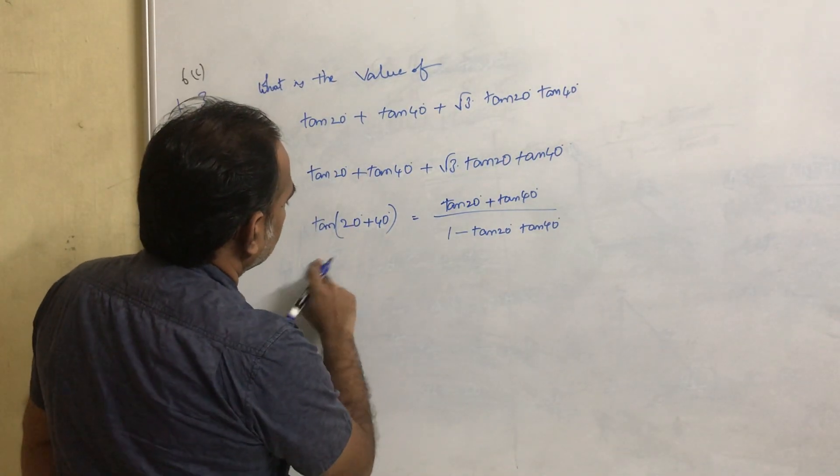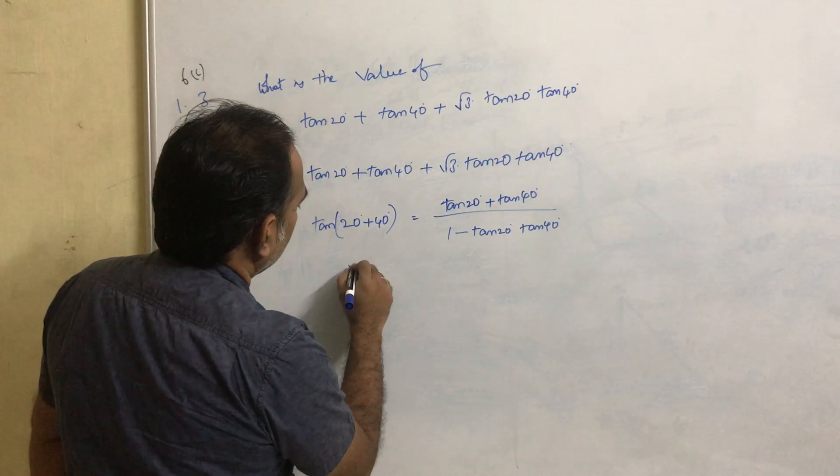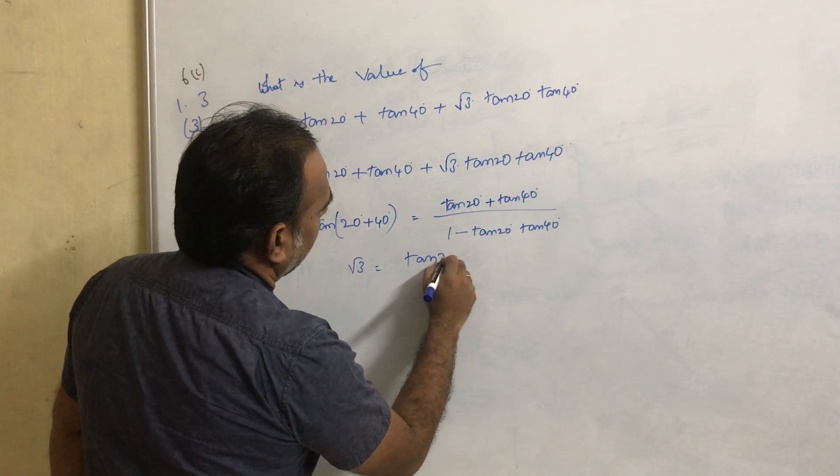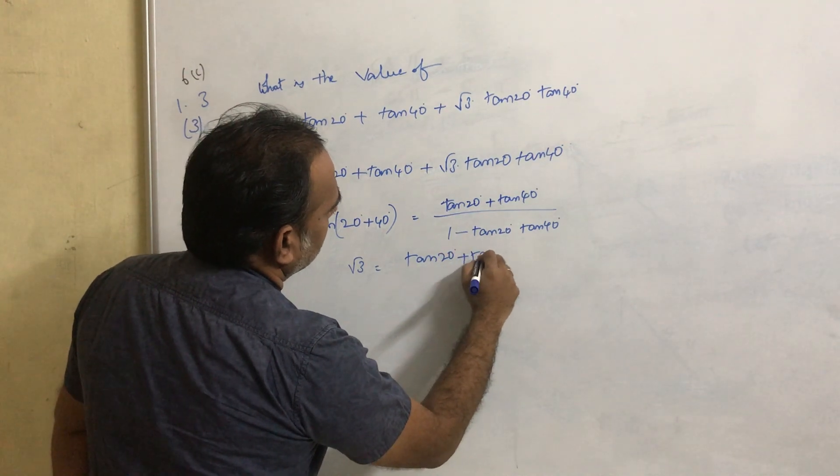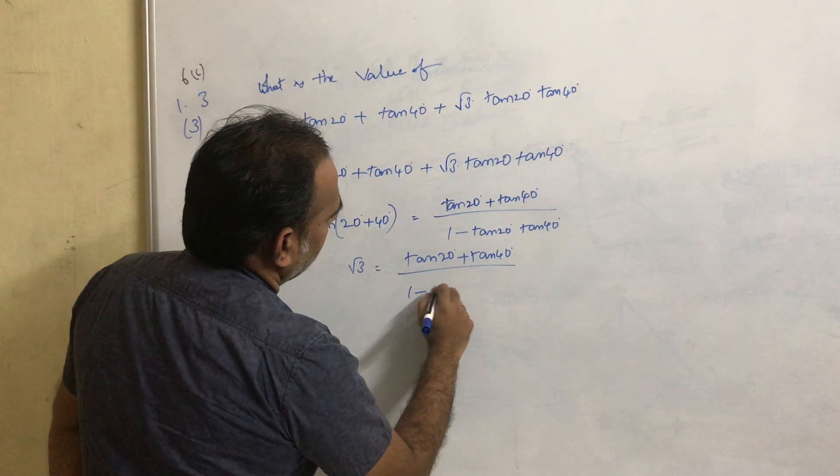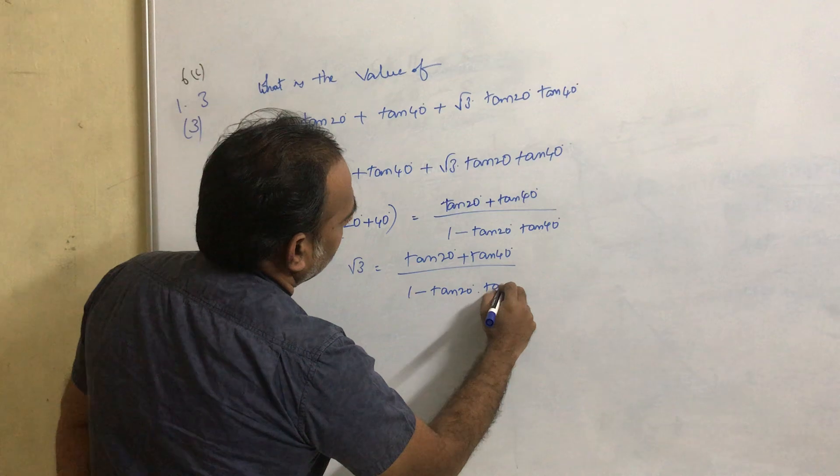Now what is tan 60°? Tan 60° equals root 3, which equals tan 20° plus tan 40° divided by 1 minus tan 20° into tan 40°.